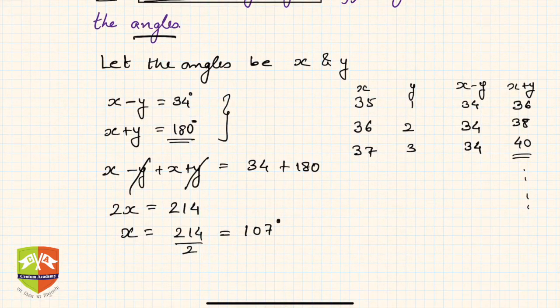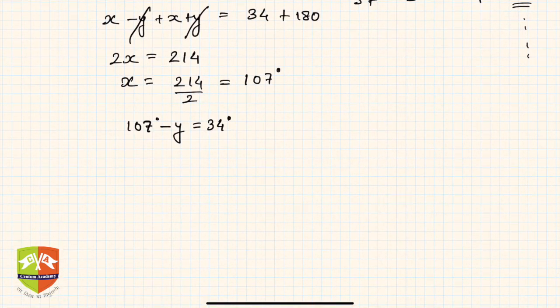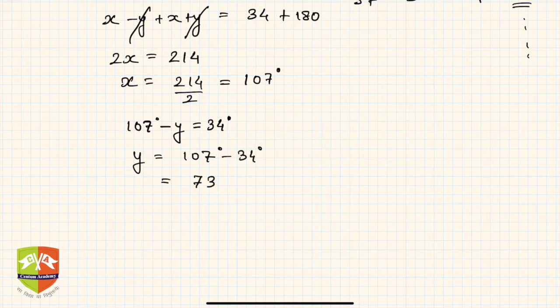What will be the other angle? You can use any of these equations. So x is 107, deploy 107 minus y is 34. So what is y? Y will be 107 minus 34 degrees, which equals 73 degrees.